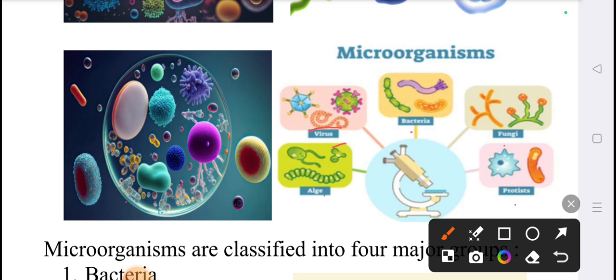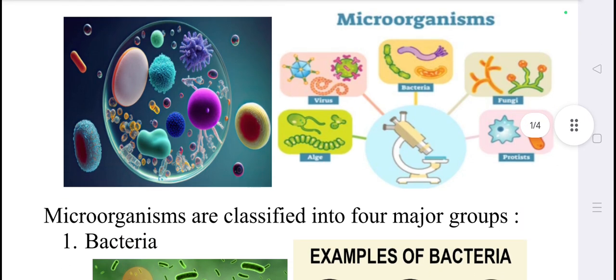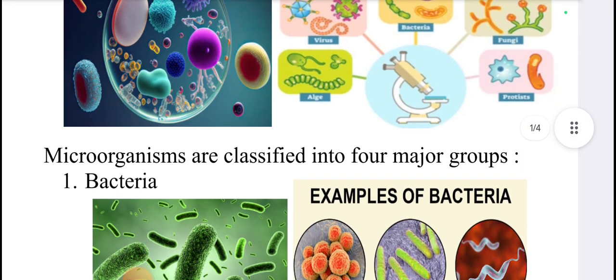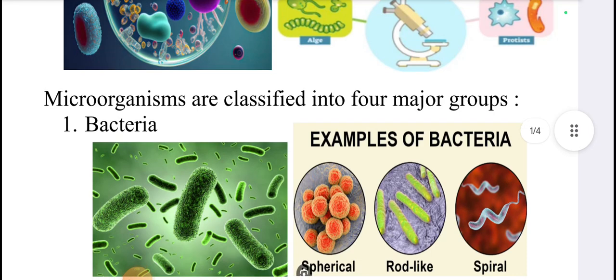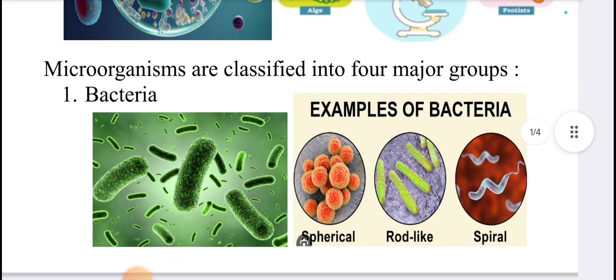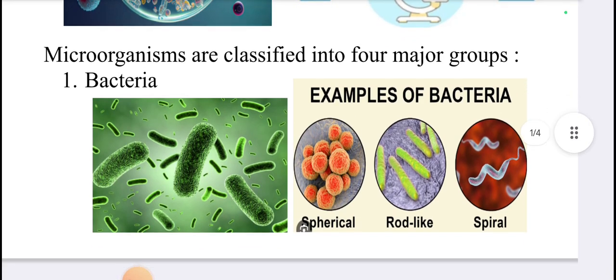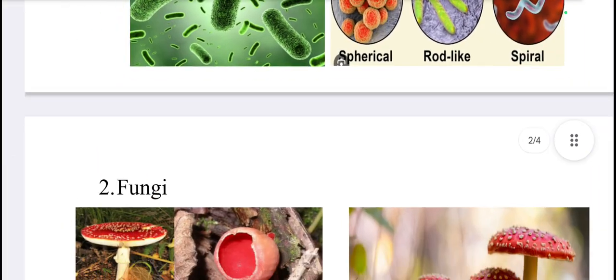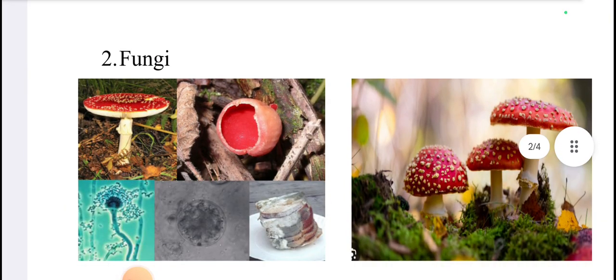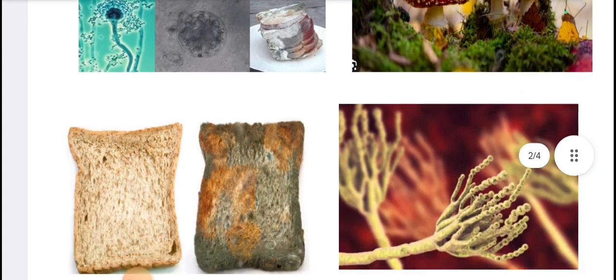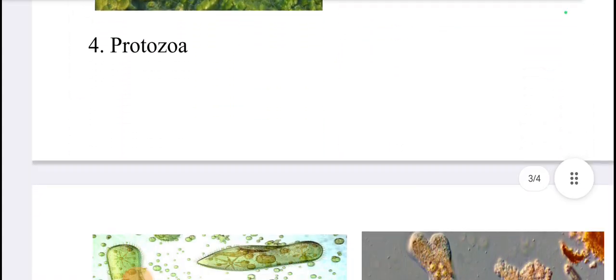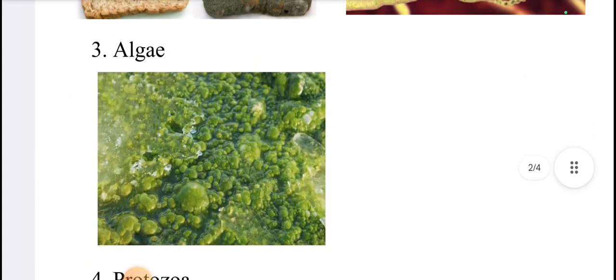These microorganisms can be seen with the help of the microscope. Microorganisms are classified into four major groups: bacteria, fungi, alga, and protozoa.